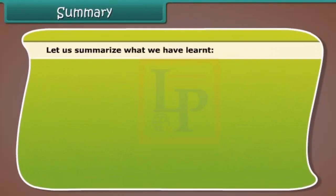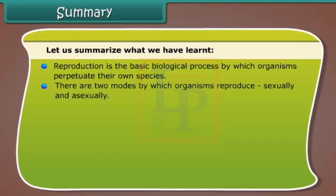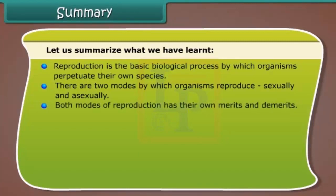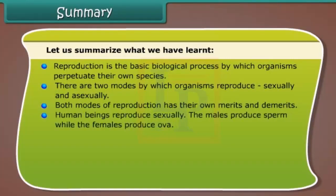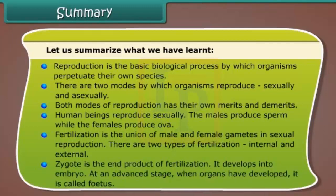In summary: reproduction is the basic biological process by which organisms perpetuate their own species. There are two modes — sexual and asexual — each with their own merits and demerits. Human beings reproduce sexually; males produce sperm while females produce ova. Fertilization is the union of male and female gametes, and there are two types: internal and external. The zygote is the end product of fertilization.